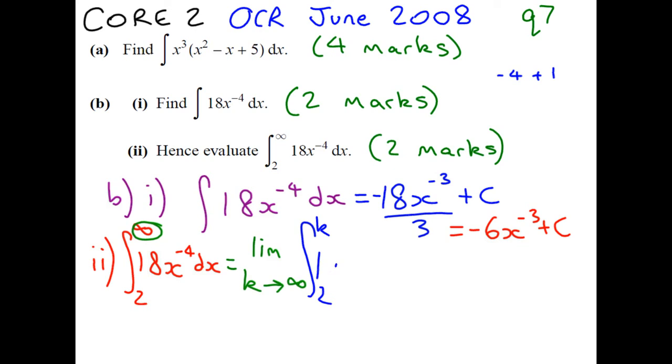And we are integrating 18x to minus 4 dx. Now, notice in part 1, we've already solved this integral. Don't give yourself extra work. You just need this part of the answer without the plus c.